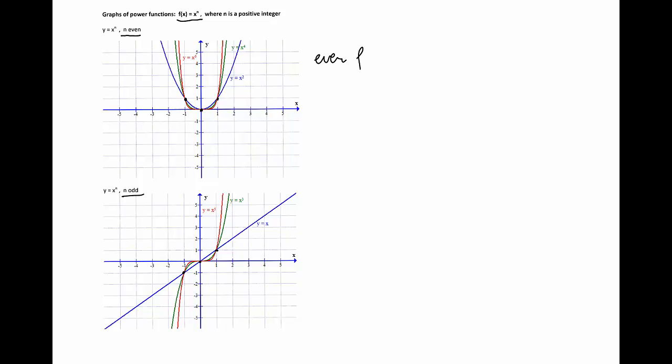The point (-1, 1) is on the graph if n is even, and the point (-1, -1) is on the graph if n is odd. Using the definition, we can easily show that if n is even the function is even, meaning the graph is symmetric with respect to the y-axis. When n is odd, the function is odd and its graph is symmetric with respect to the origin.